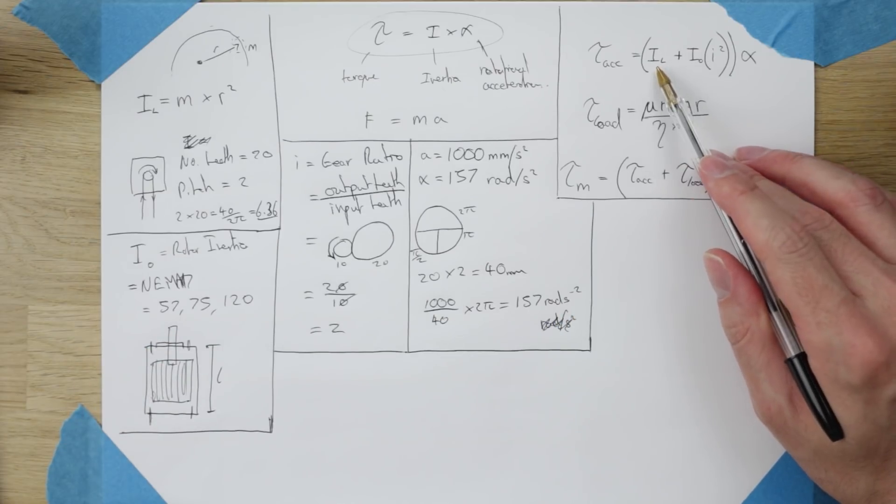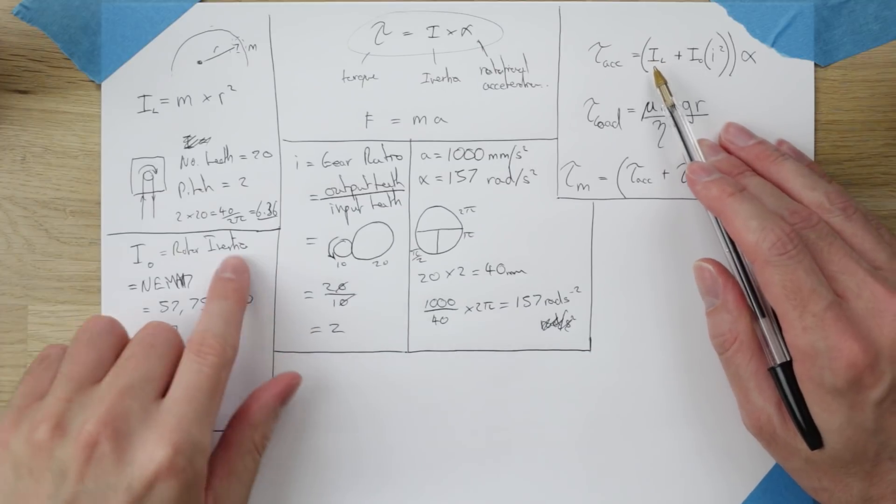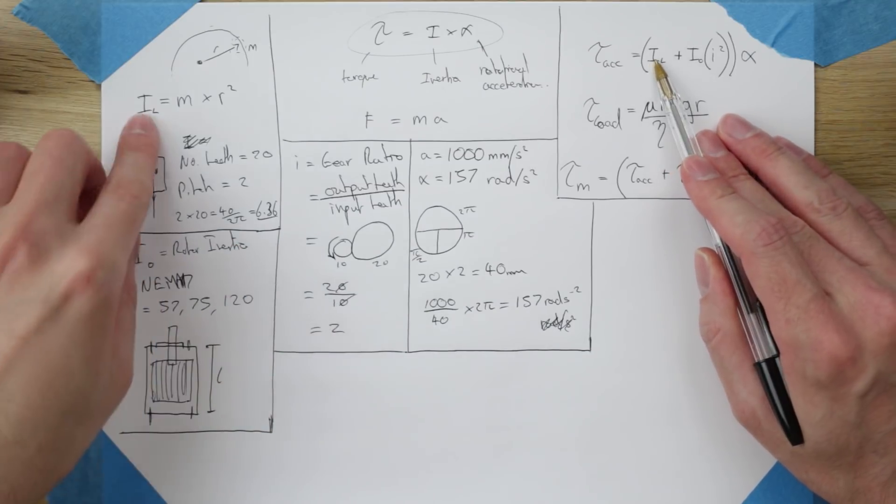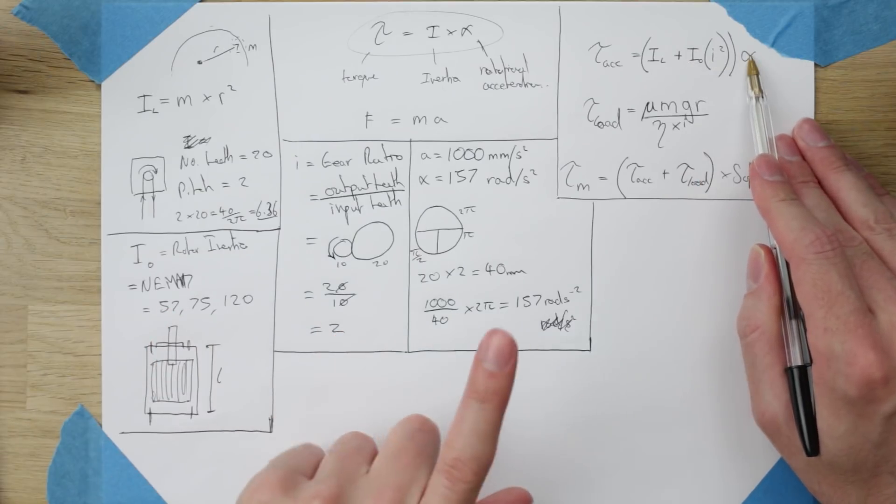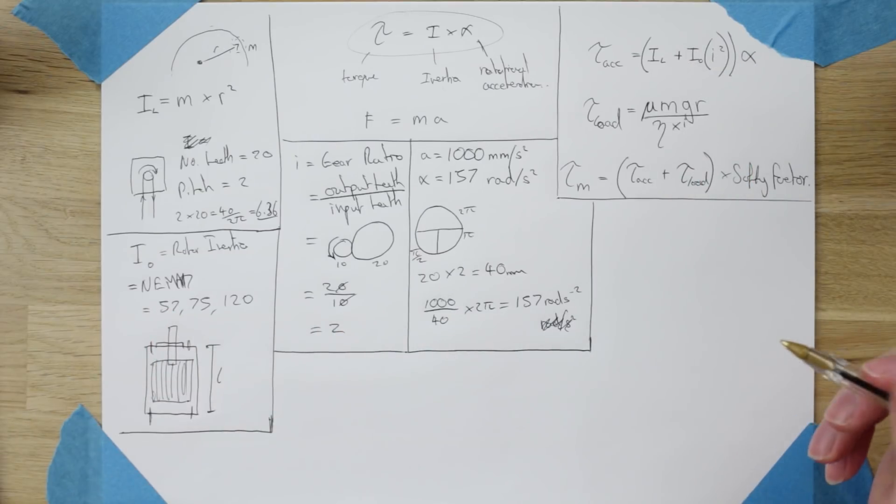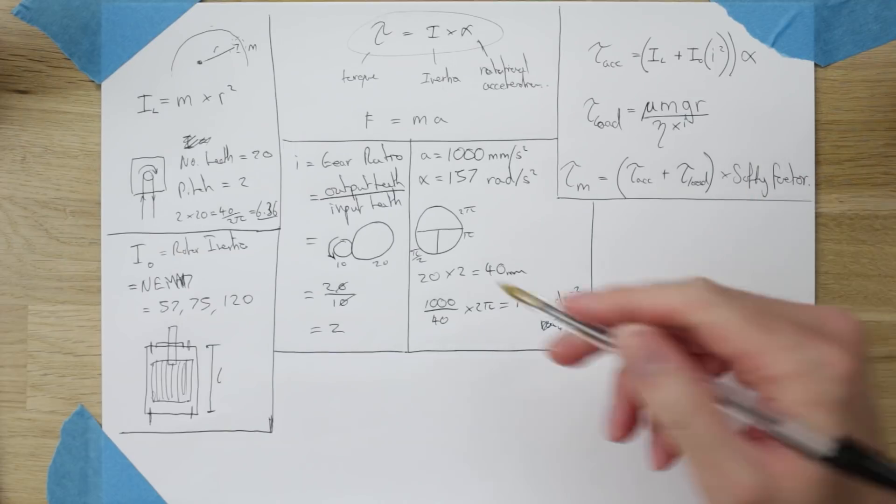So on the first line we've got everything we need now. Well we would if we actually put values in, but these are the equations. For iL we've got this, for i0 we've got this, for i squared we've got this, and for alpha we've got this. When we put this all into Excel we'll be able to put numbers in and find an actual value.